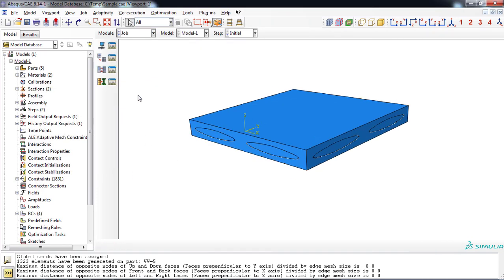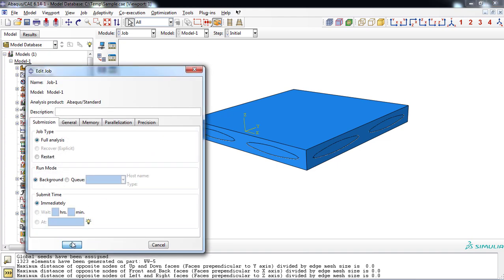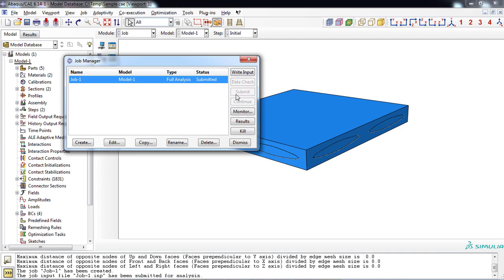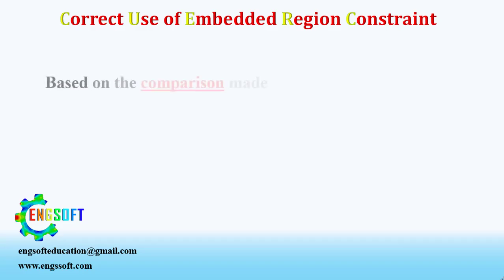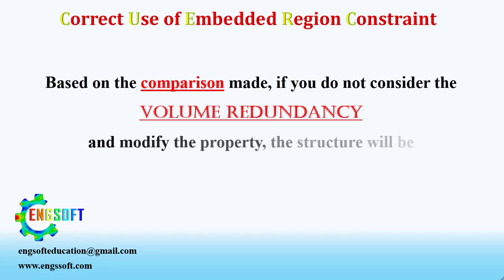Now everything is ready. Press the Submit button in the Job module. You can see the results in the Visualization module. Based on the comparison made, if you do not consider the volume redundancy and modify the property, the structure will be 7% stiffer.